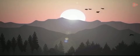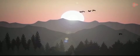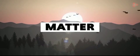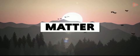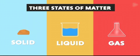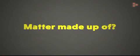Everything that we see and feel around us is termed as matter. We know that matter is classified into three major states. And what are these three states of matter? They are solid, liquid, and gas. Have you thought about what the matter around us could be made up of?